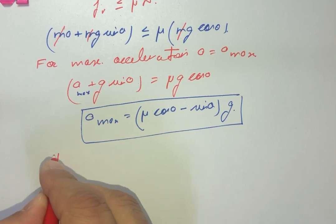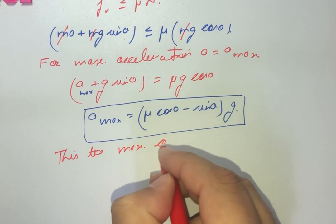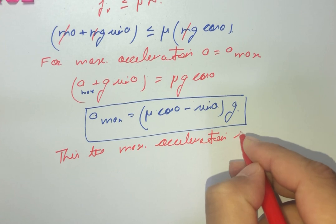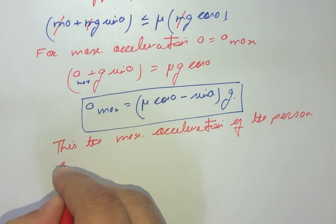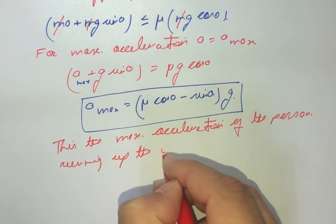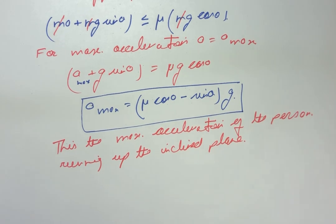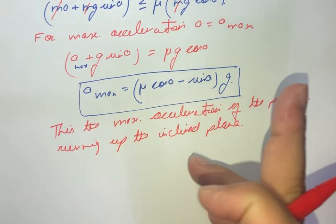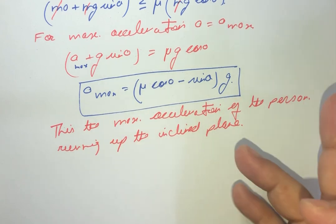So the maximum acceleration is a_max equals g times (mu cos theta minus sin theta). This is the maximum acceleration of the person running up. We can also note that the mass term is absent from this equation, which means the maximum acceleration is independent of the mass of the person.